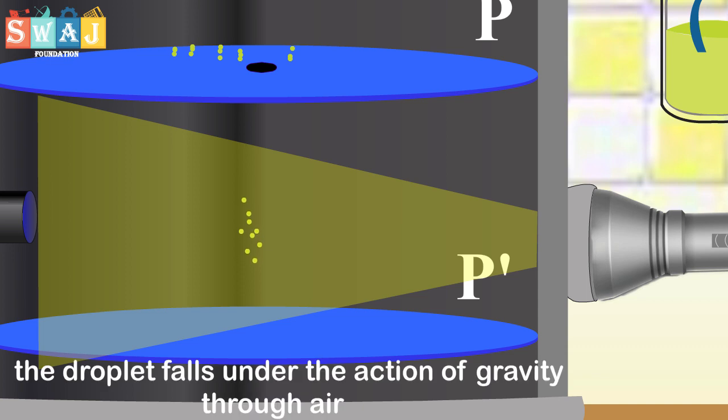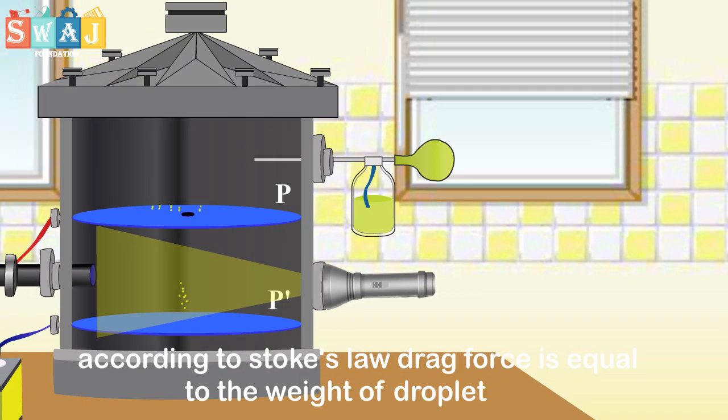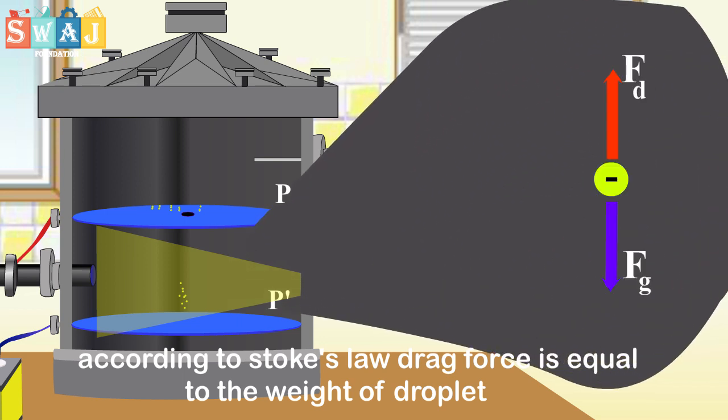The droplet falls under the action of gravity through air. It attains terminal speed at the instant electric field is switched off. According to Stokes law, drag force is equal to weight of the droplet.